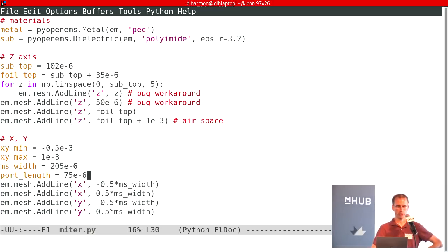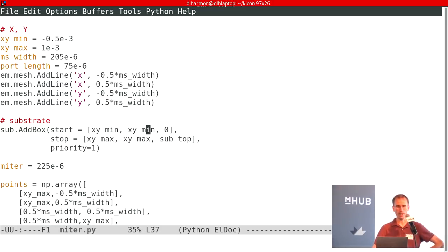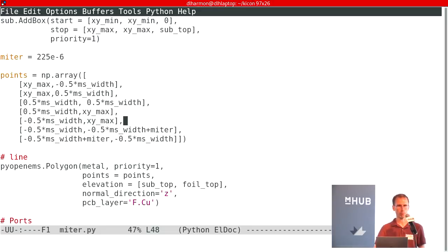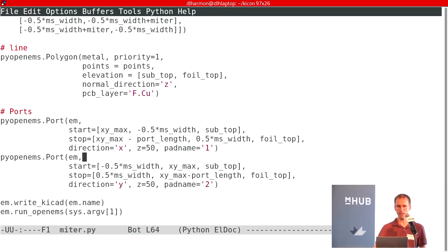More calculations in X and Y. We add a box, which is our substrate. This is the same Oshpark flex. That covers the entire X-Y plane of our simulation box. We have an array of points, which is our polygon for the mitered bend. And then we take that array of points and give it to the PyOpenEMS polygon function. We also tell it PCB layer is f.cu. That's telling it this goes in the PCB and put it on this layer. And we add two ports. Again, they have pad names, which go into KiCAD and become the pads there for the connections. And we tell it write KiCAD and run OpenEMS.